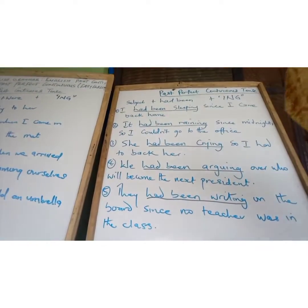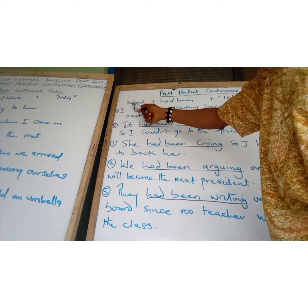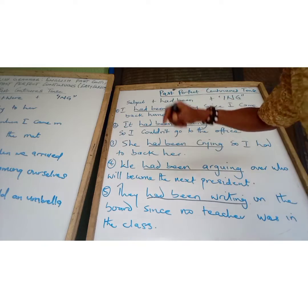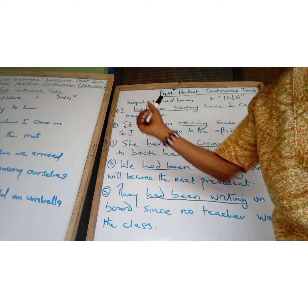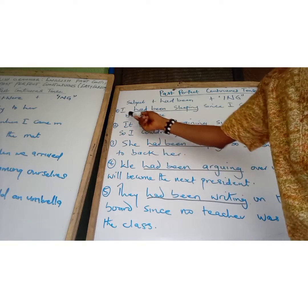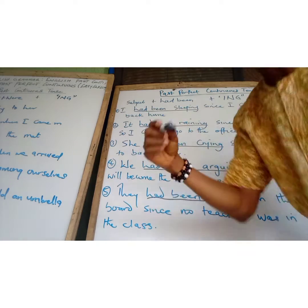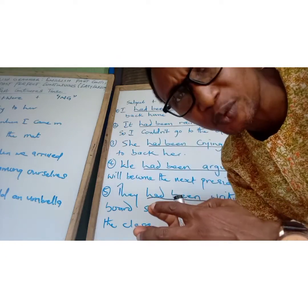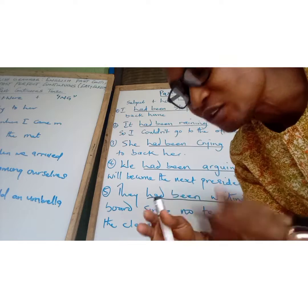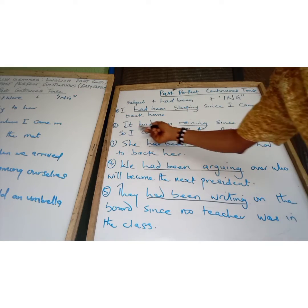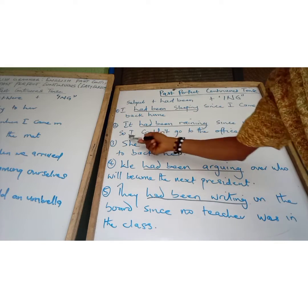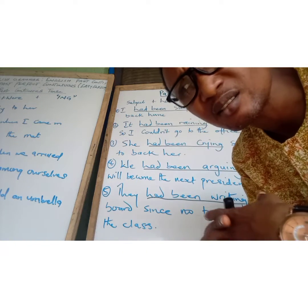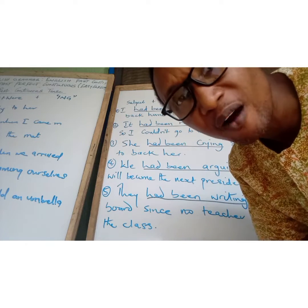Now let's look at the past perfect progressive tense. Do not forget the subject determines the tense, plus '-ing.' Look at this sentence: 'I had been sleeping since I came back home.' I really had a very terrible day at work, so when I came back I just went to bed and slept off. Then: 'It had been raining since midnight, so I couldn't go to the office.'